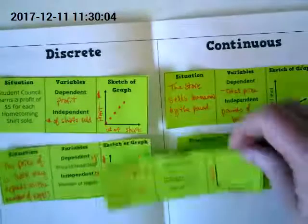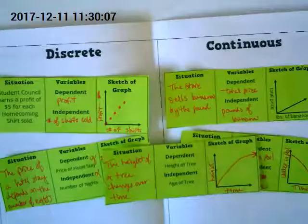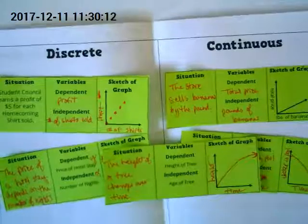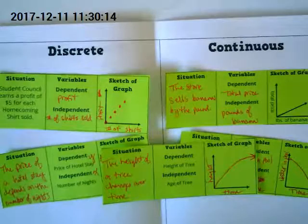Next. The height of a tree changes over time. I made my graph look like at some point the tree kind of stops growing fast and might grow a little bit slower. Is it continuous or discrete? Continuous.